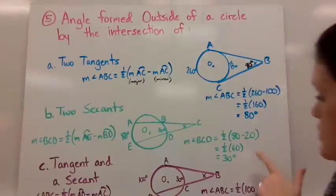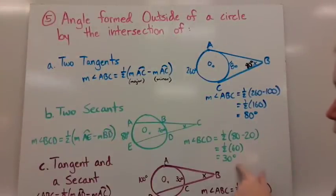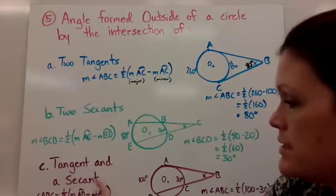and then you took half. So 80 minus 20 was 60, half of that was 30, and then a tangent and a secant.